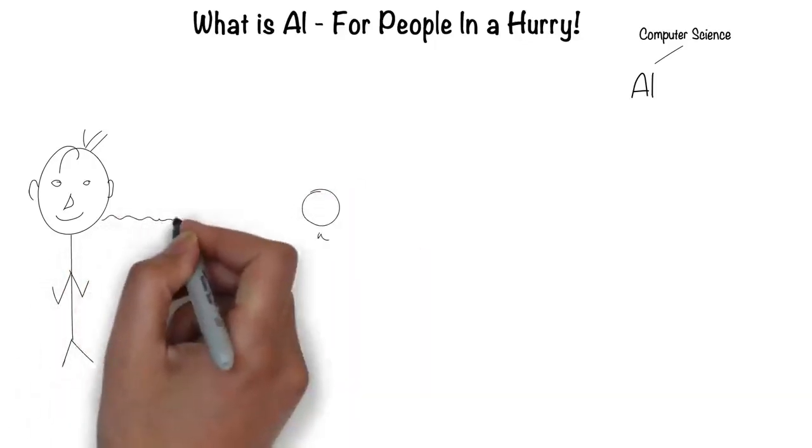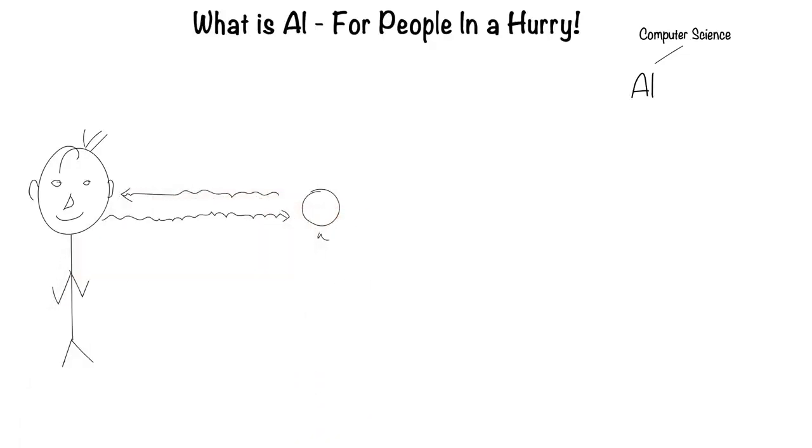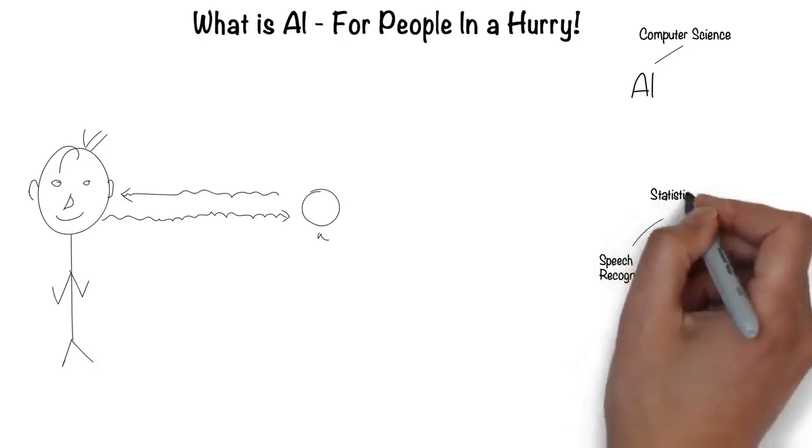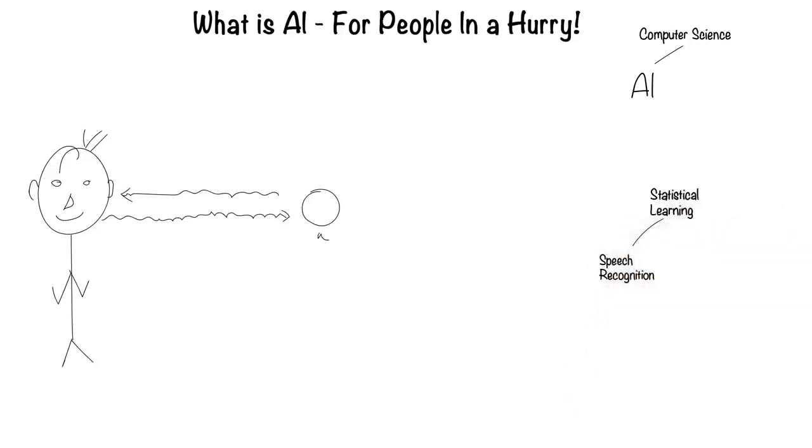Humans can speak and listen to communicate through language. This is the field of speech recognition. Much of speech recognition is statistically based, hence it's called statistical learning.